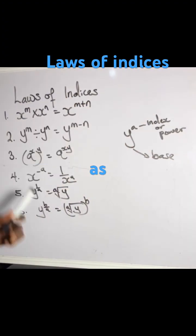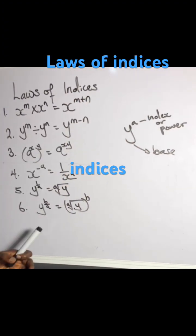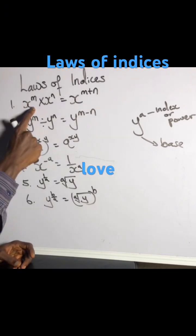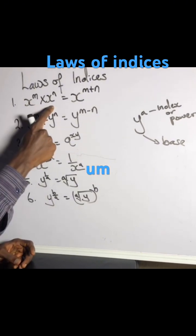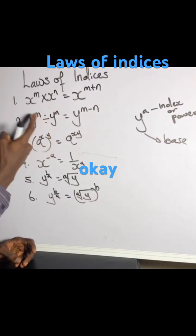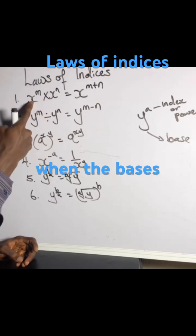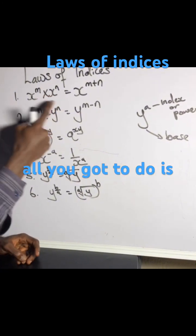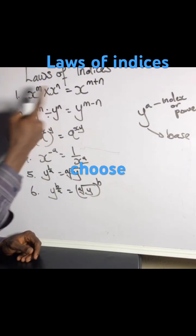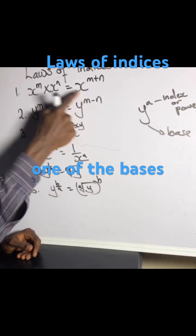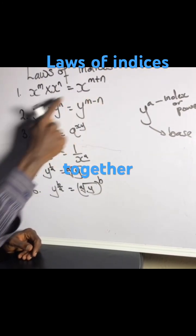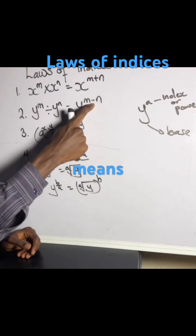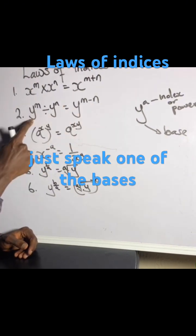The plural form of index is what we refer to as indices. The first law is that indices love addition — when the bases are the same and you are multiplying, all you gotta do is choose just one of the bases and then add their powers together. And when you see division, division means minus — just use one of the bases. It only works when the bases are the same.